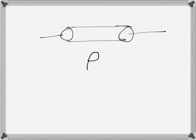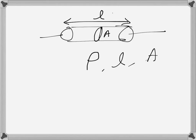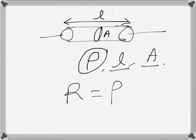The resistance depends on the material property, and when we consider a certain length of conductor L, and its cross-sectional area A, the resistance is given by ρL/A. We can see that the longer the wire, the more the resistance, and the larger the cross-section, the less the resistance. That makes sense because it's all about the number of electrons flowing — more resistivity means fewer charges flow.